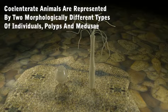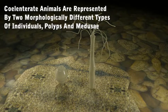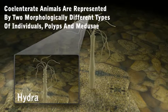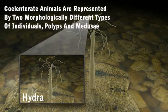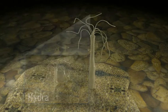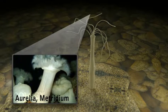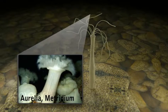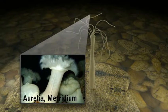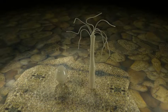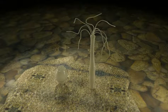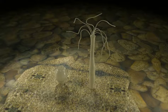Polyps are sessile with a tubular body, such as hydra, whereas medusae are free-swimming with an umbrella or bell-shaped body, such as Aurelia. Some coelenterates pass through both stages in their life cycle with an alternation of generations.